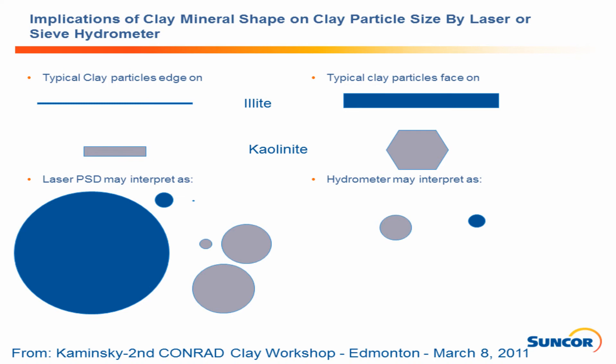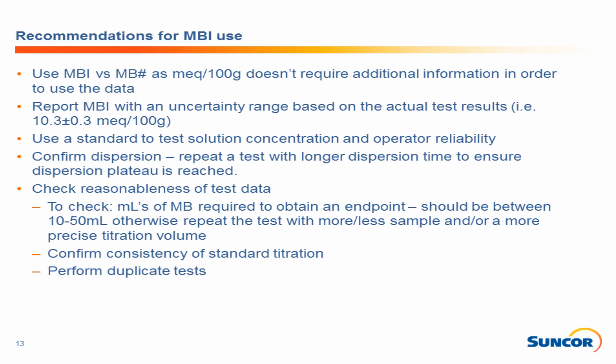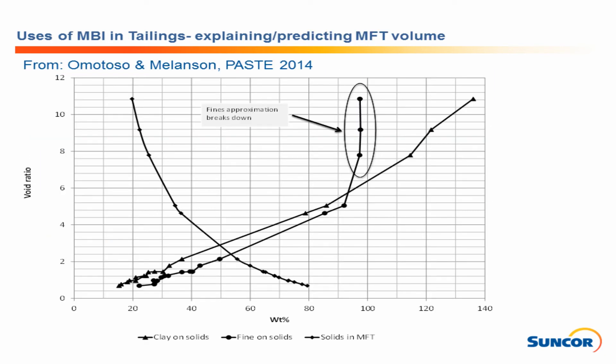Recommendations for methylene blue use: report as MBI in milliequivalents per 100 grams, because you don't require additional information and people can directly use that data. If you use methylene blue number, you must report the normality. Always report with an uncertainty range based on actual test results. Use a standard test for solution concentration and operator reliability. Confirm your dispersion — repeat the test with a longer dispersion time if results look odd. Confirm milliliters at endpoint are between 10 and 50, confirm consistency of standard titrations, and perform quality control tests.